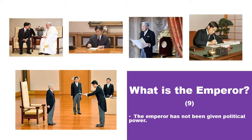The emperor has not been given political power. The Constitution of Japan, from Article 3 onward, mainly describes the rules for the emperor's conduct of state affairs. The most important point is that the emperor is not given the power to conduct actual politics.